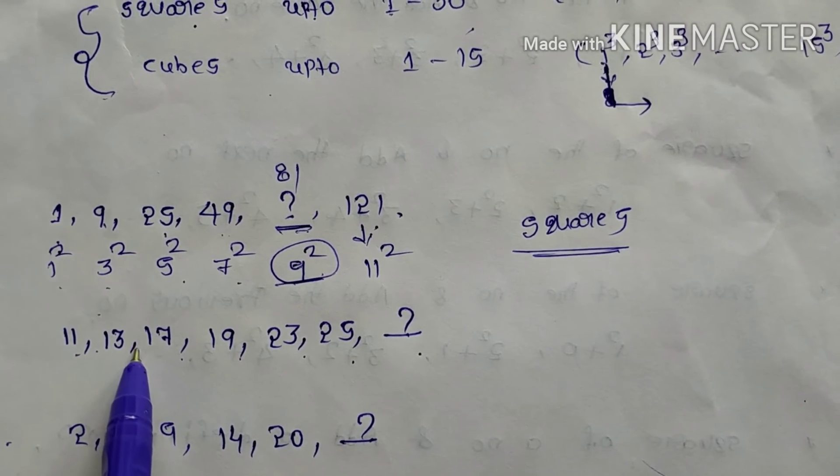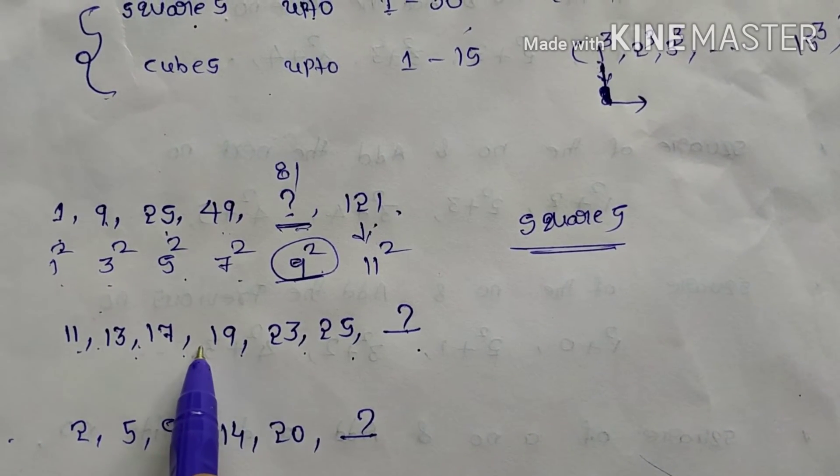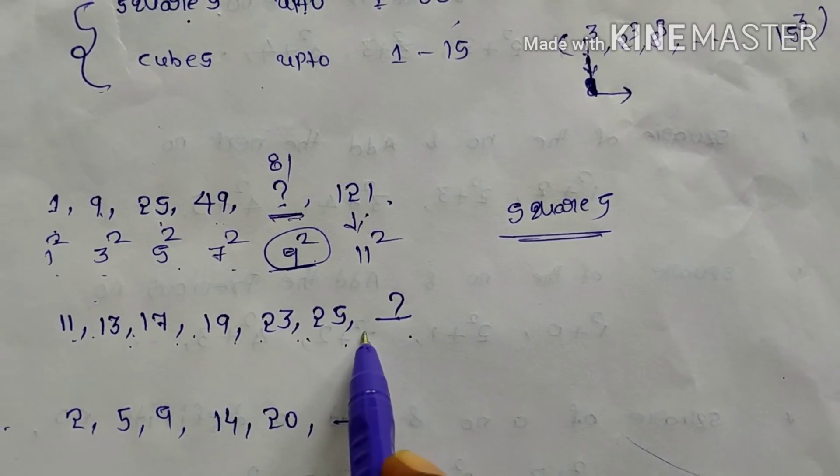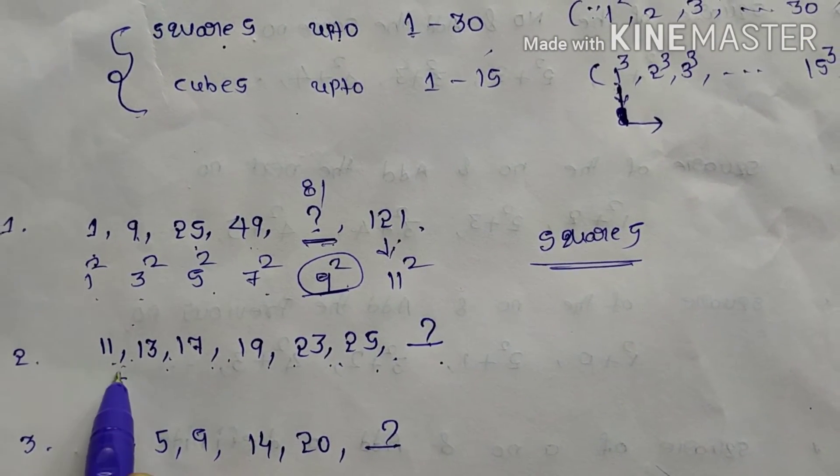11, 13, 17, 19, 23, 25. It is increasing series. See the difference.